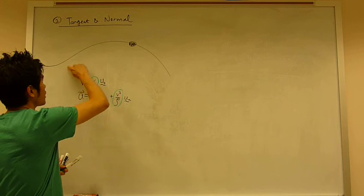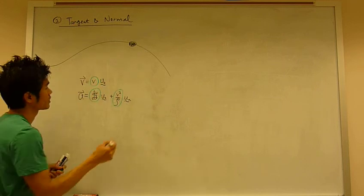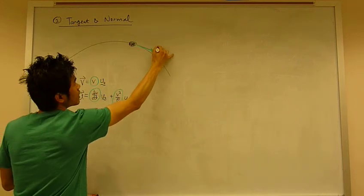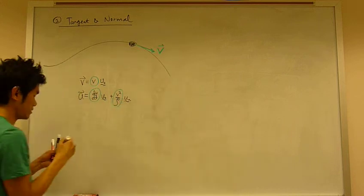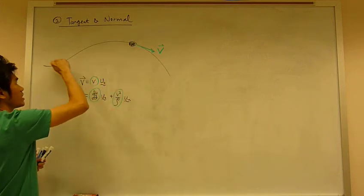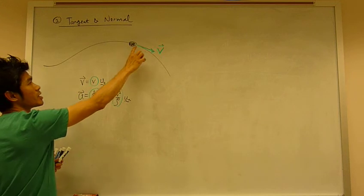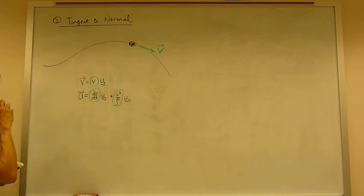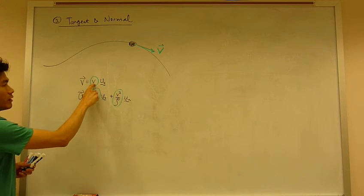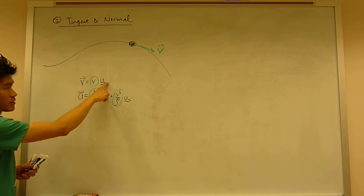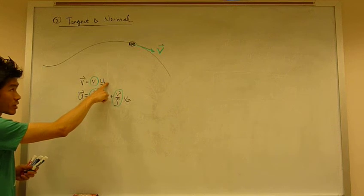So this particle is traveling along this curved path with a velocity, and the velocity can change. The magnitude of velocity can change at any instant in time, but the velocity is always tangent to the path. And it's expressed by v, the magnitude of velocity, and that's the unit vector, ut-direction.